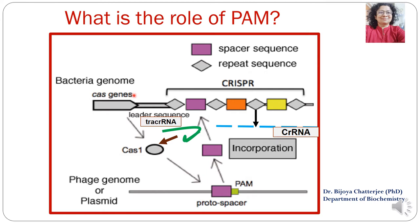The first region is the Cas gene region, which gives rise to the Cas protein. It is followed by the leader sequence, then the repeat sequence. The repeat sequence is palindromic, and then comes the spacer sequence.